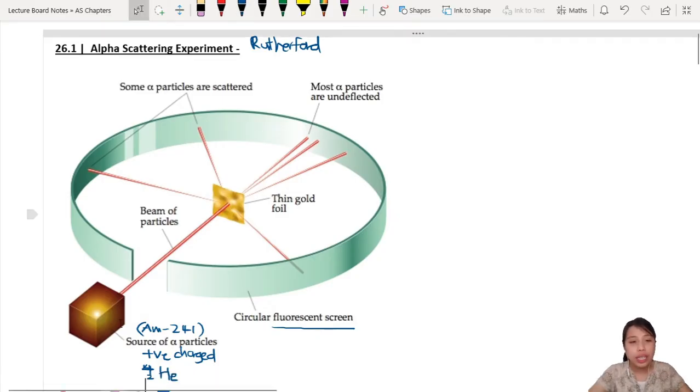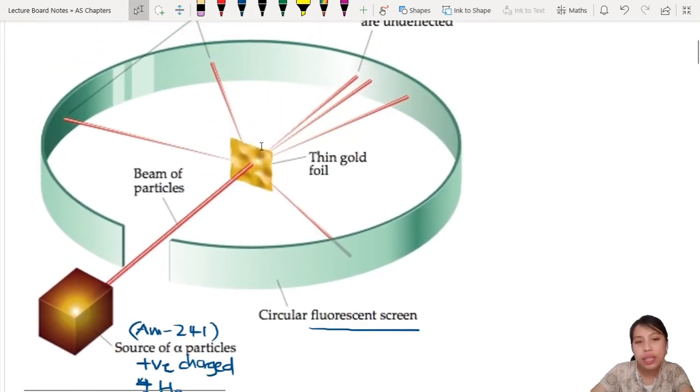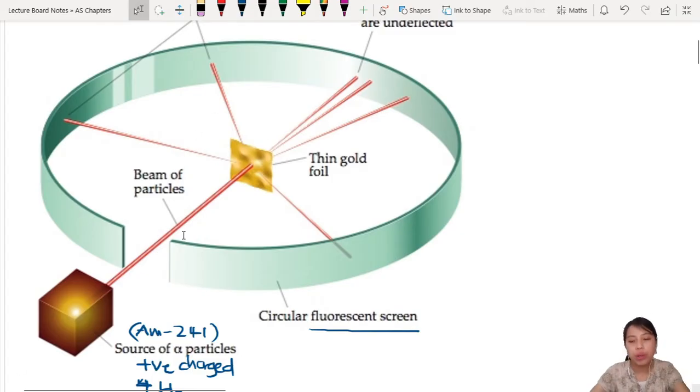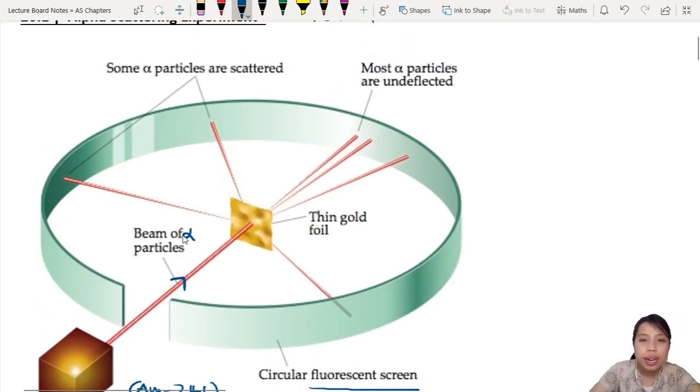You take all these alpha particles and shoot them at a thin foil - beam of alpha particles through this thin foil that's really thin, like one layer of gold atoms. When you shoot through that, you'll see some alpha particles go through and hit the screen. When they hit the screen, it lights up. He sits in the room and waits for this fluorescent screen to light up, then measures the angle.